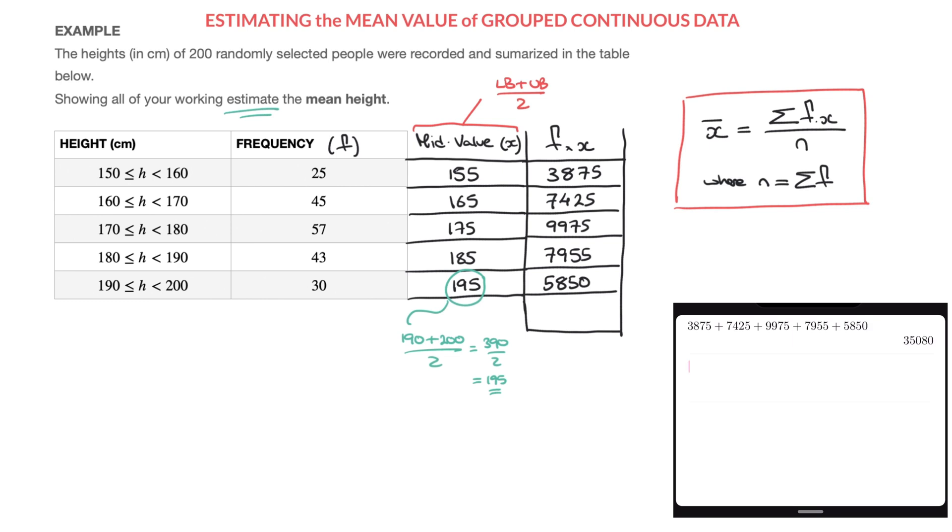And as we can see on my calculator screen, that's equal to 35,080. So in this formula here, this 35,080 is what we'll write on the numerator. It's the sum of all the f times x's. And in fact, I'll already write that at the bottom of the screen here.